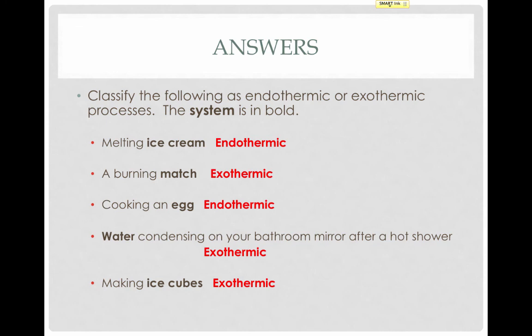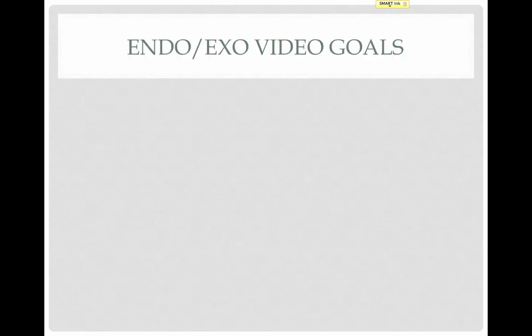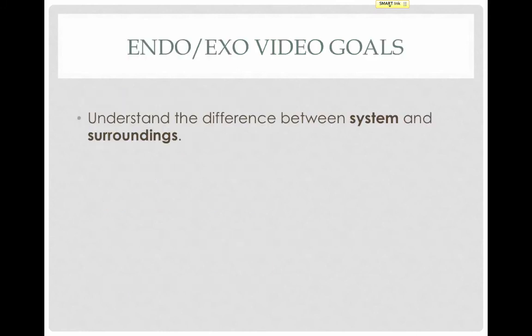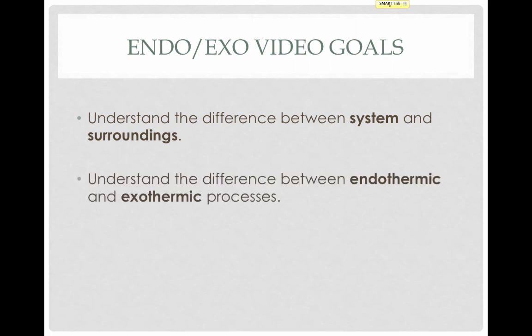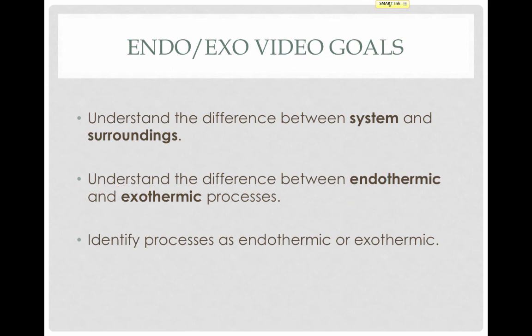That brings us to the end of this video. Let's quickly review our goals. First, we looked at the difference between the system and the surroundings — the system being what we want to focus on and the surroundings being everything else. Then we looked at the difference between endothermic and exothermic processes. Endothermic processes are processes where energy enters the system, and exothermic processes are processes where energy exits the system. Finally, we looked at how to identify processes as being endothermic or exothermic.